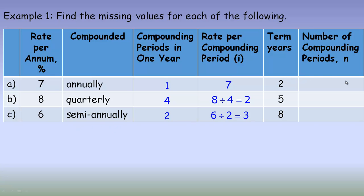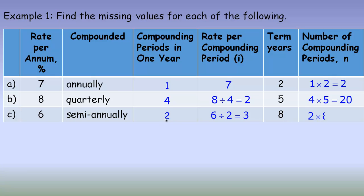The number of compounding periods is found by multiplying the number of compounding periods per year by the number of years. The first is compounded once a year for 2 years: 1 times 2 equals 2 compounding periods. The second has 4 compounding periods per year for 5 years: 4 times 5 equals 20 quarterly periods. The last is semi-annual for 8 years: 2 times 8 equals 16 half-year periods in 8 years.